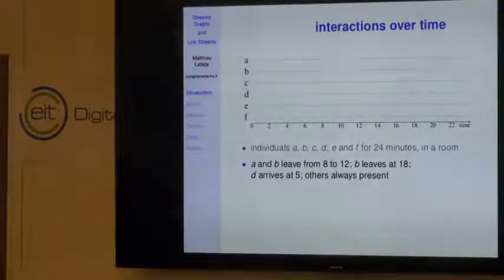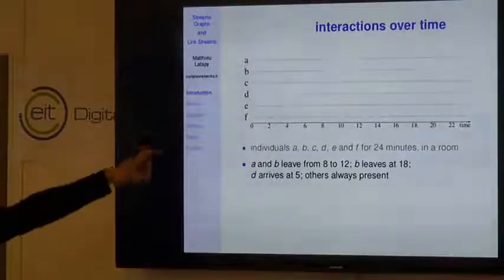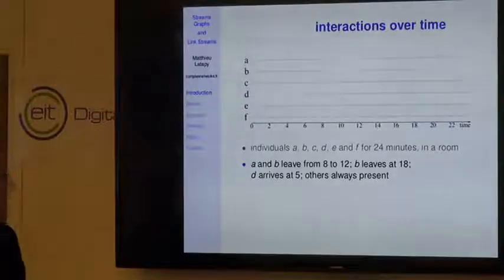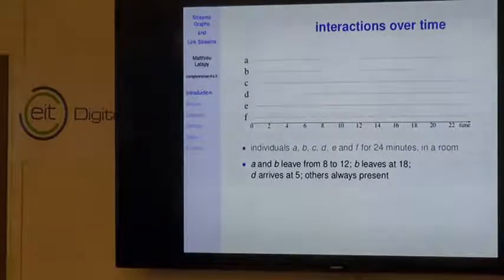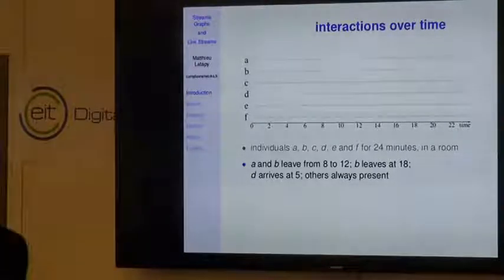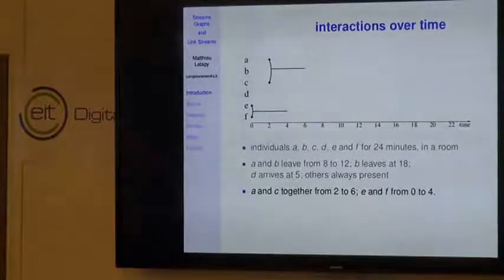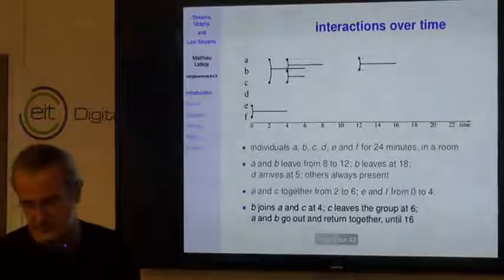First, the nodes are not always present—the individuals are not always in the room where I observe them. So there is a dynamics on nodes. For instance, A is present from time 0 to time 8, then leaves and comes back at time 12, staying until the end. There are also interactions between nodes—for instance, an interaction between A and C from time 2 to time 6, and another between E and F from time 0 to time 4.